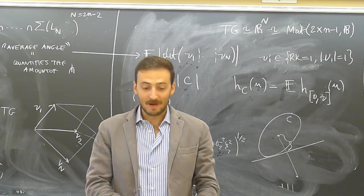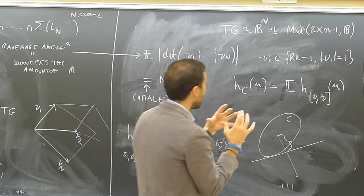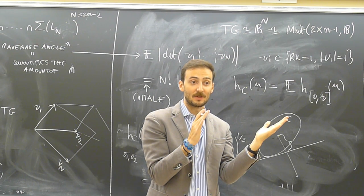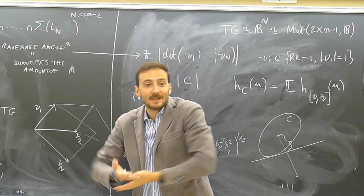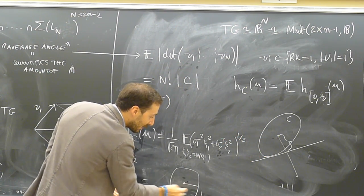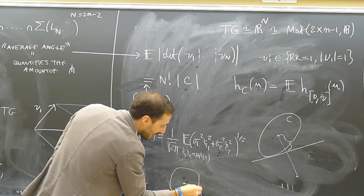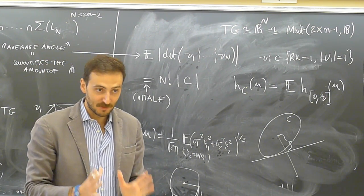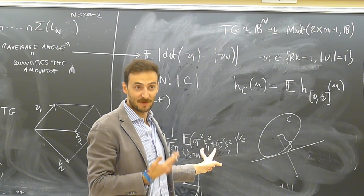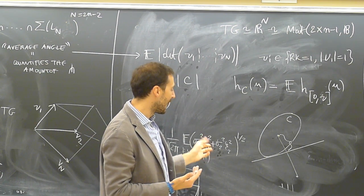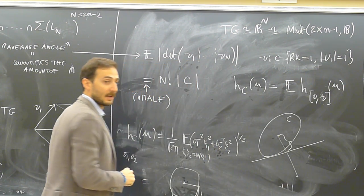To compute the volume of a convex body we integrate the radial function over the sphere. Here we can switch to singular-value coordinates; the radial function depends only on the singular values and is a power of the radial function of the R^2 convex body. This is why Laplace's method works: we have a high-dimensional integral reduced to a function of just two variables raised to a large power. Using Laplace's method — approximating the function near its maximum — we can compute the asymptotics of this volume. This same approach works for the Grassmannian of k-planes in R^n.